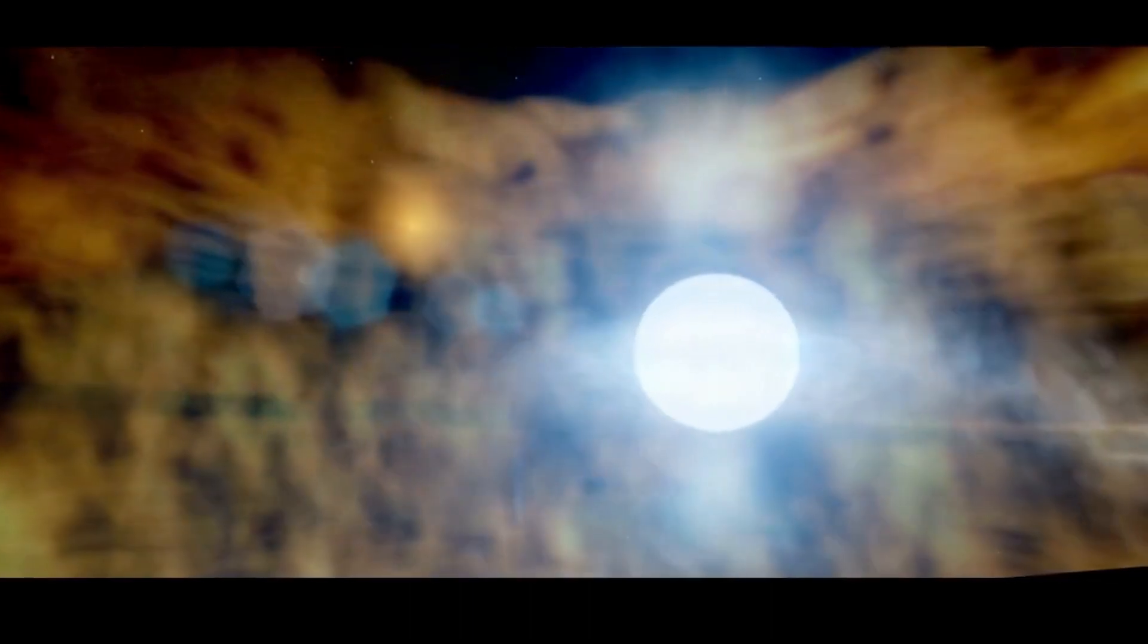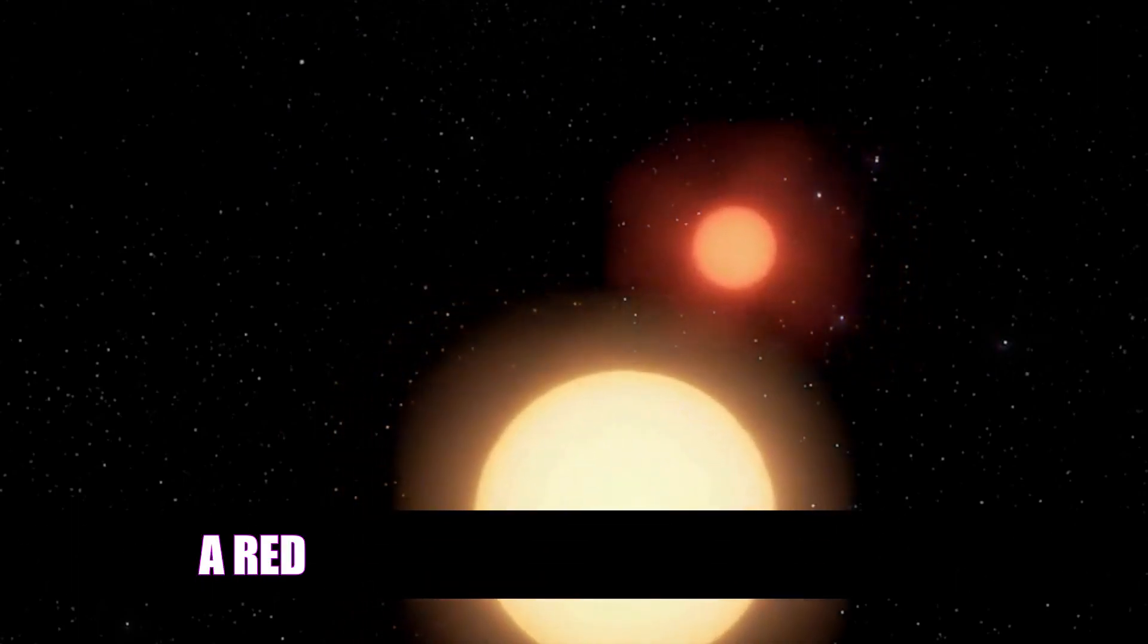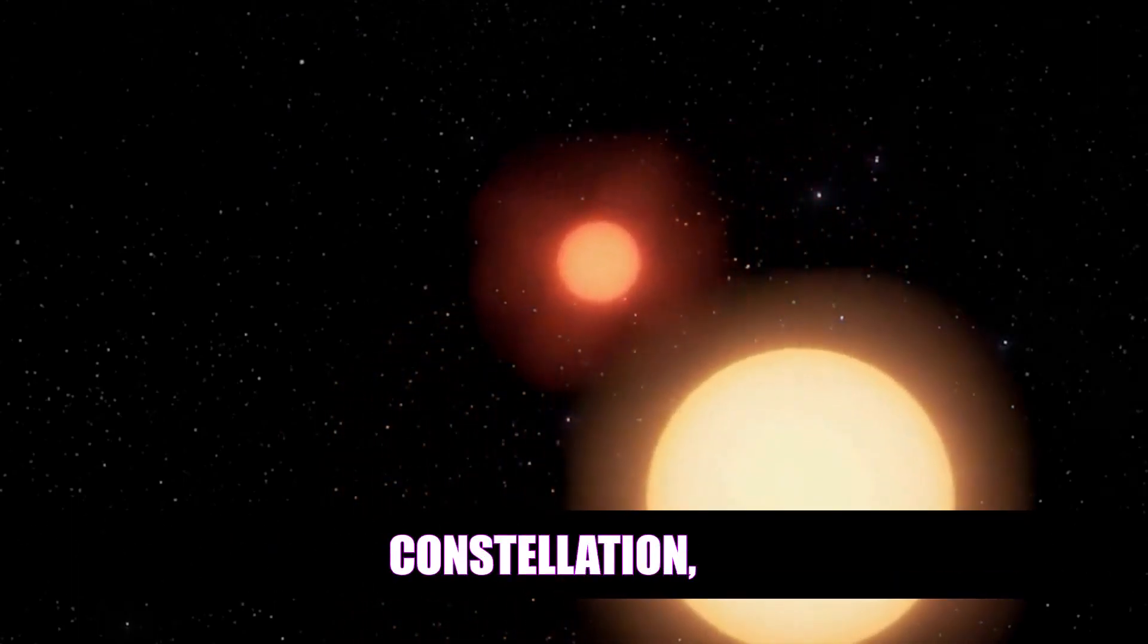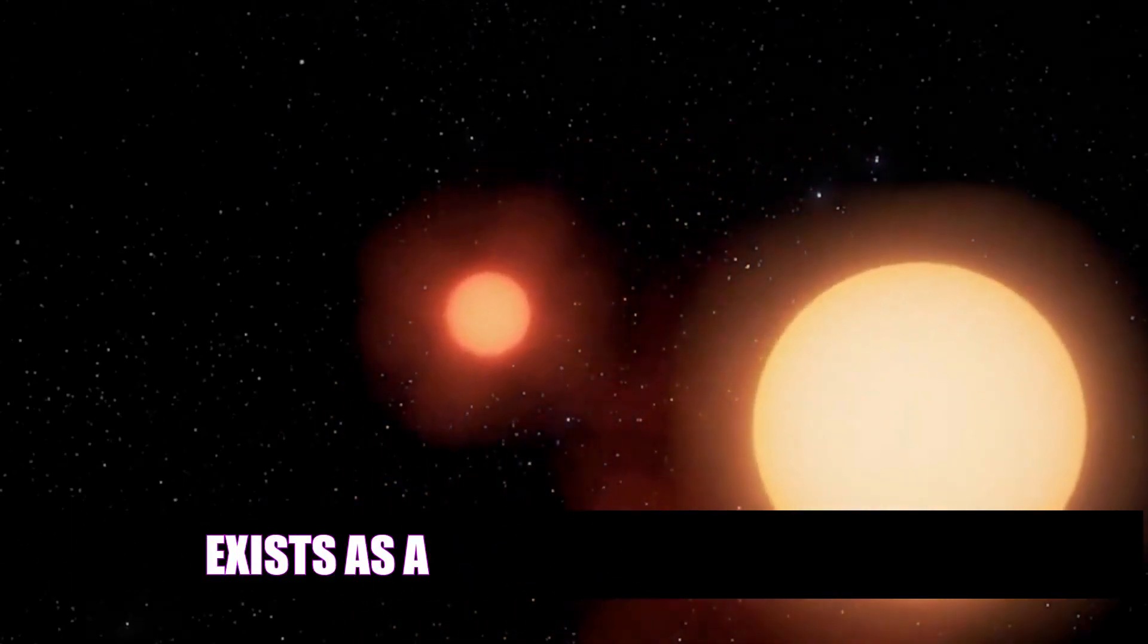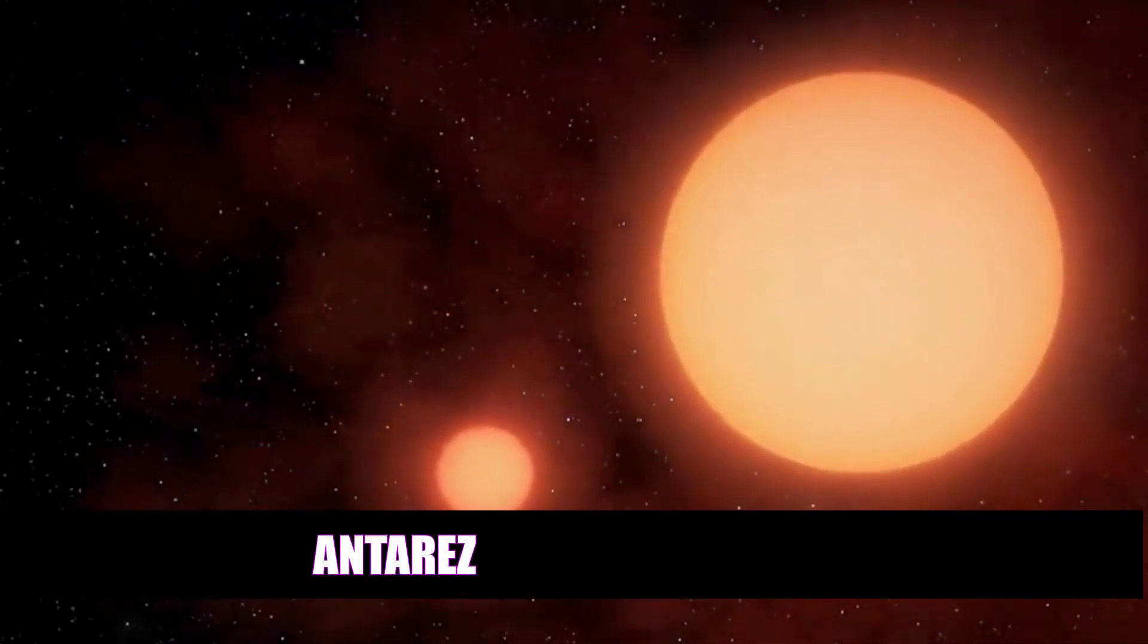Let's explore a few notable examples of binary systems. Antares, a red supergiant in the Scorpion constellation, exists as a binary with a hotter blue main sequence star, Antares B.